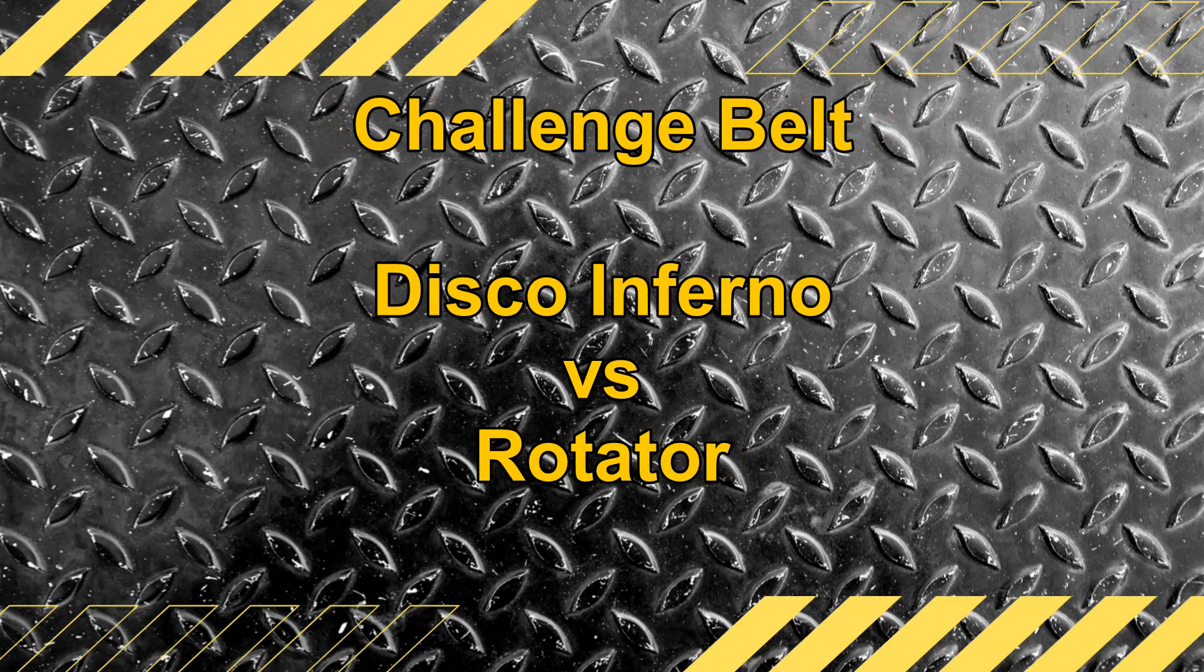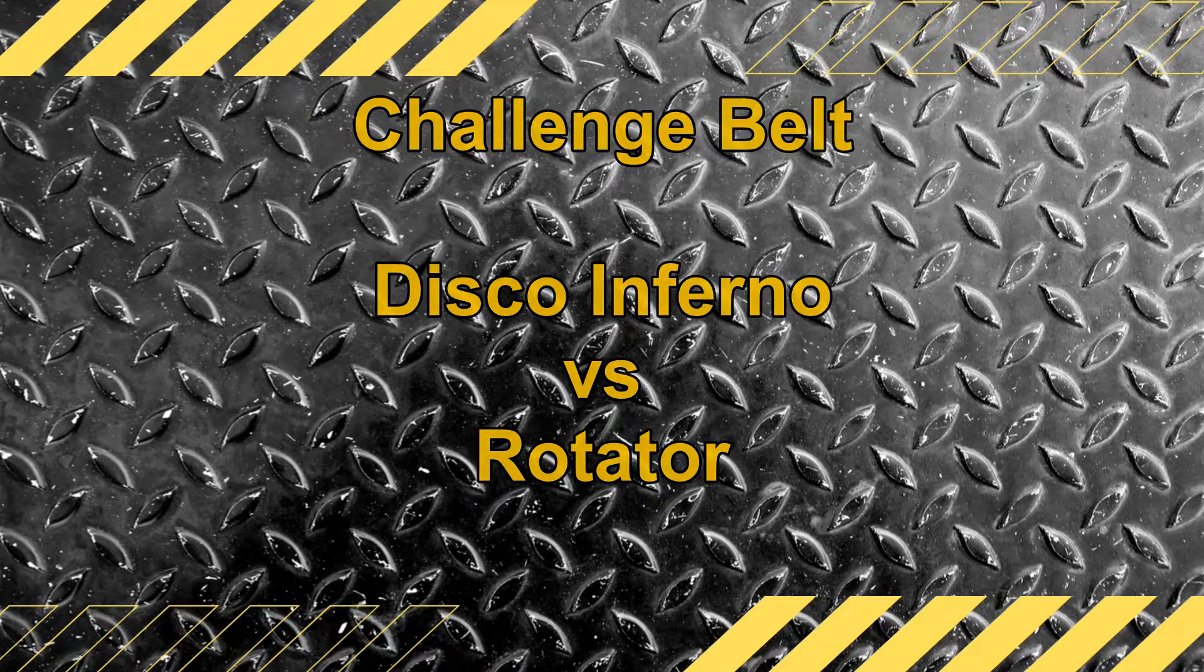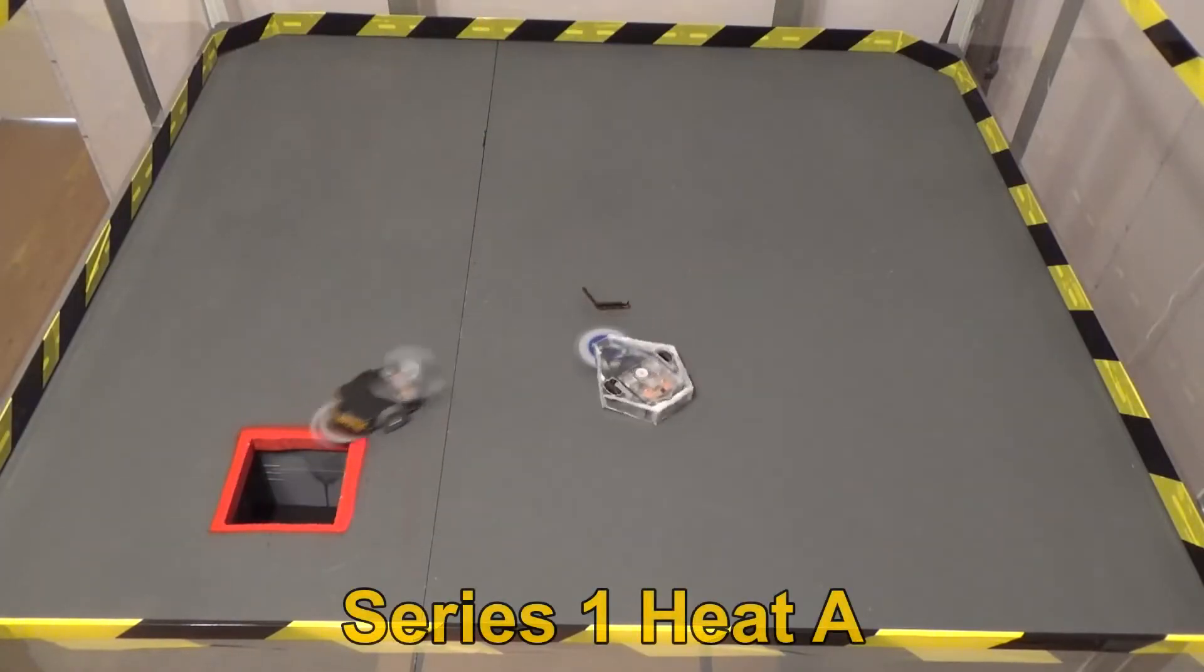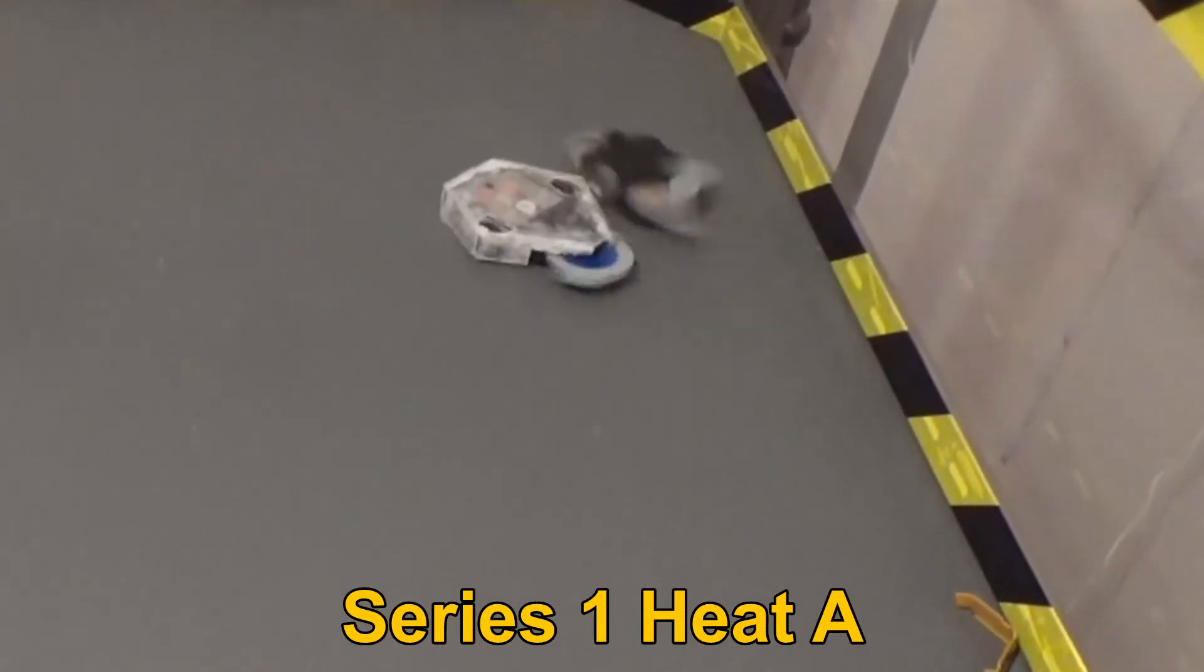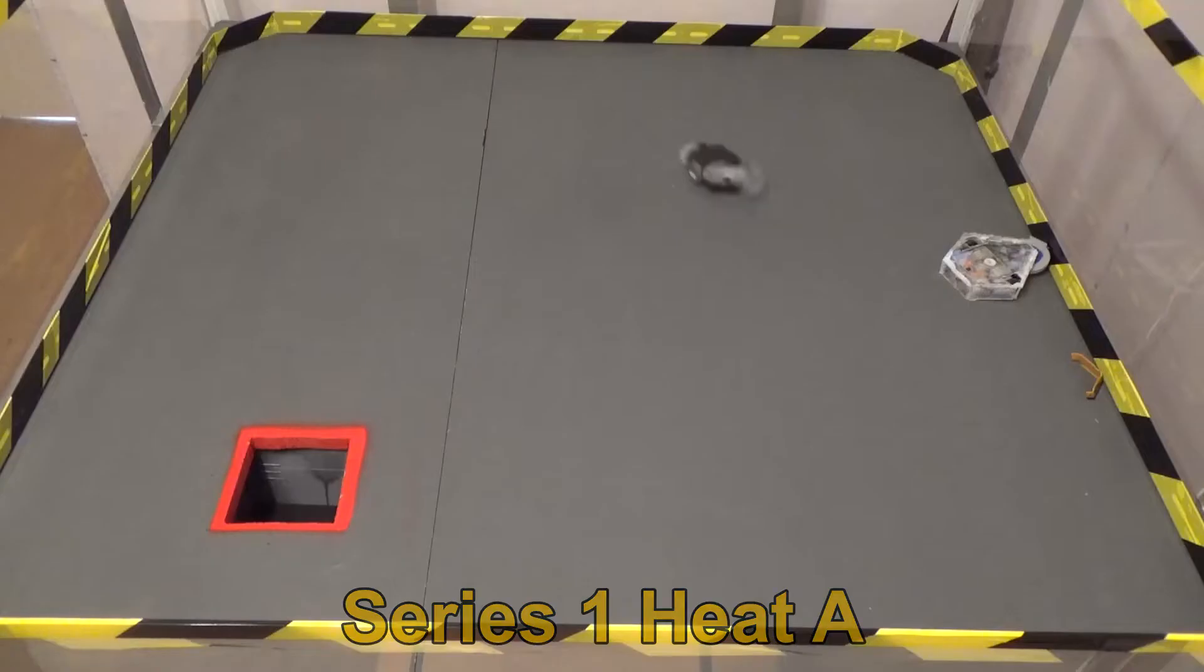Next up is our next challenge belt holder, Disco Inferno, with a fresh campaign to begin with, and starting with Rotator. They met before, so this also doubles as a grudge match. Rotator managed to upend Disco Inferno after some lucky swipes at their weapon. A precise hit under the disc stopped them from progressing forward. Rotator want the belt, Disco wants revenge.